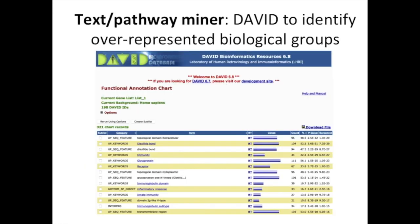Here's an example of a text pathway miner — this is David. We're mining text, looking for overrepresented biological units in the gene list. David is kind of a crappy program. What I don't like about it is that a lot of these text miners don't take fold-change information — and I think fold-change is very important. If your gene goes up or down in your system, that's important information to know. David does not account for that.